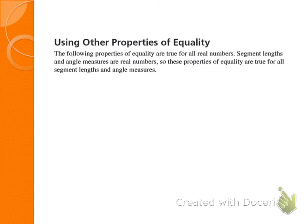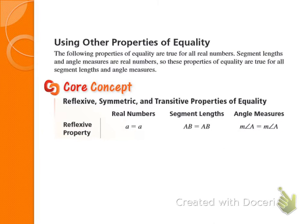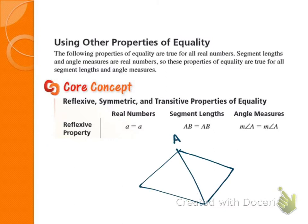Using other properties of equality — these more apply to geometry. The first is the reflexive property. It sounds redundant, but it applies more to geometry. For example, when proving triangles congruent, you'll have to say that side AB from one triangle is equal to AB on the other triangle — you have to say something is congruent to itself. That's the reflexive property.